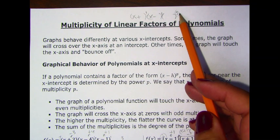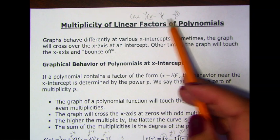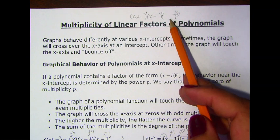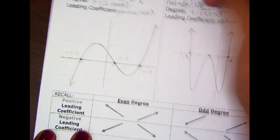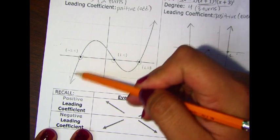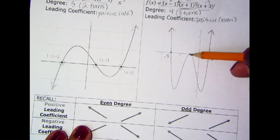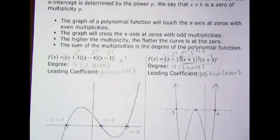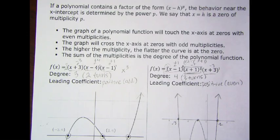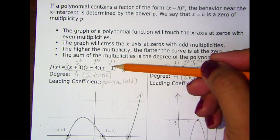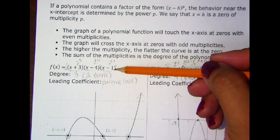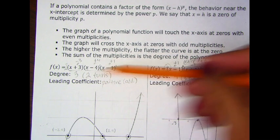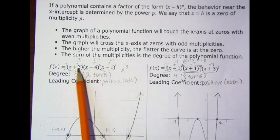This exponent can tell us whether this factor, which will create a zero, is going to either have a graph that will go through that zero or will touch and turn at that zero. So it's a really neat way to not even need a graphing calculator — just look at the factors given for the polynomial and make some conclusions about each zero.